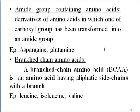Some amino acids are derivatives in which one of the carboxylic groups has been transferred into an amide group. Examples are asparagine and glutamine. There are also branched chain amino acids, with examples being leucine, isoleucine, and valine.